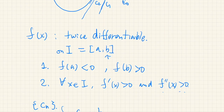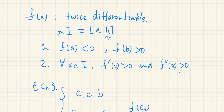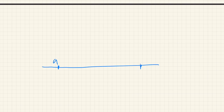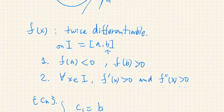Let's check all the conditions. f of a is negative, so if you plot the function between a and b — this is a and this is b — f of a is somewhere below zero and f of b is positive. We're assuming the function is twice differentiable, so it is continuous.